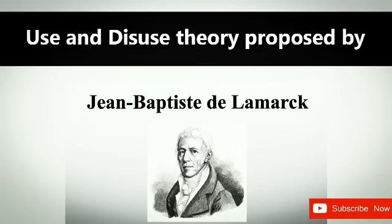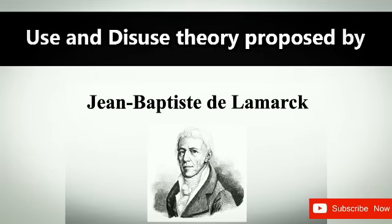Use and disuse theory proposed by whom? Answer: Lamarck. According to this theory, the use of a part or organ of a species over a long period of time results in that part or organ being well developed in subsequent generations. Long neck of giraffe is such an example. Use and disuse theory by Lamarck.